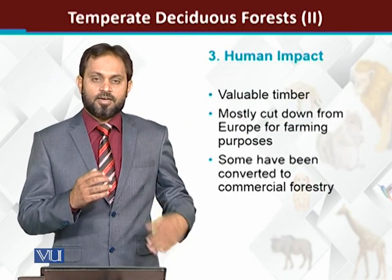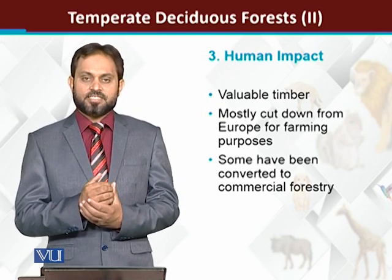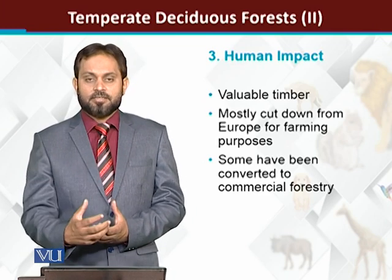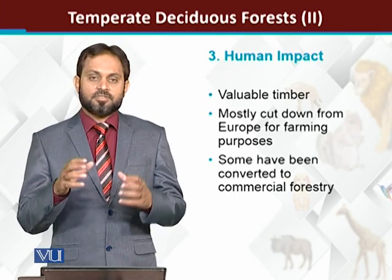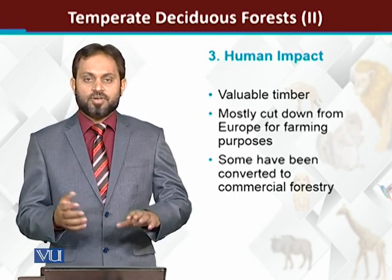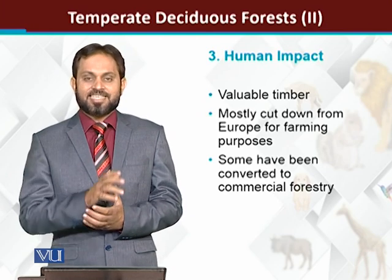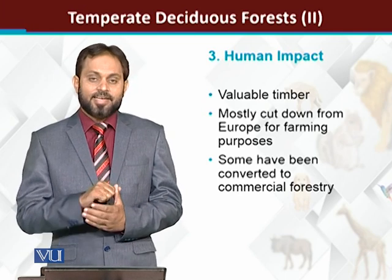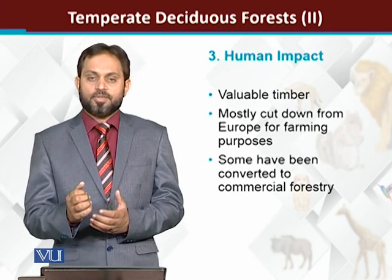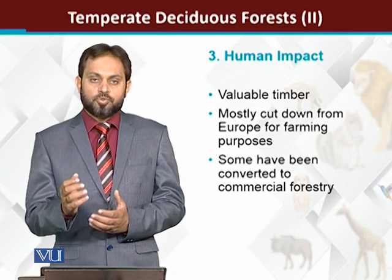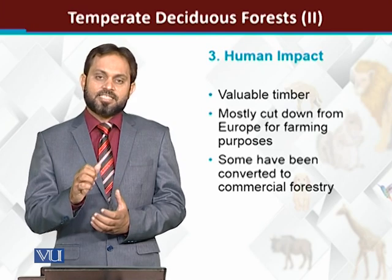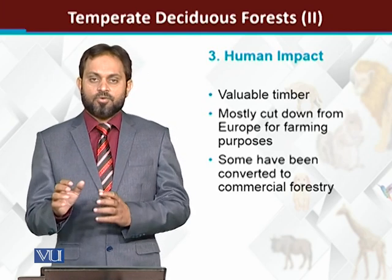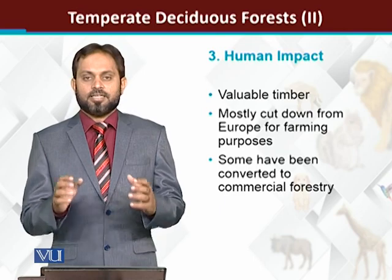Human impact: Temperate Deciduous Forests have very fertile land, which is why humans have cleared them. The Temperate Deciduous Forest has been removed through agricultural practices — the fertile land was converted for farming. These agricultural practices are the main reason actually declining the Temperate Deciduous Forest area.